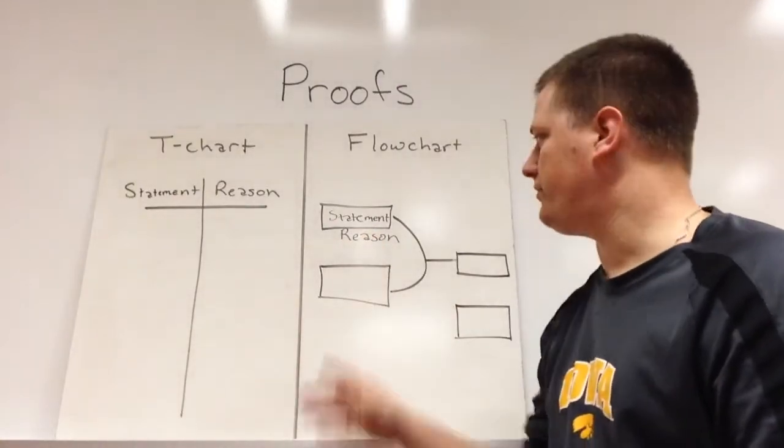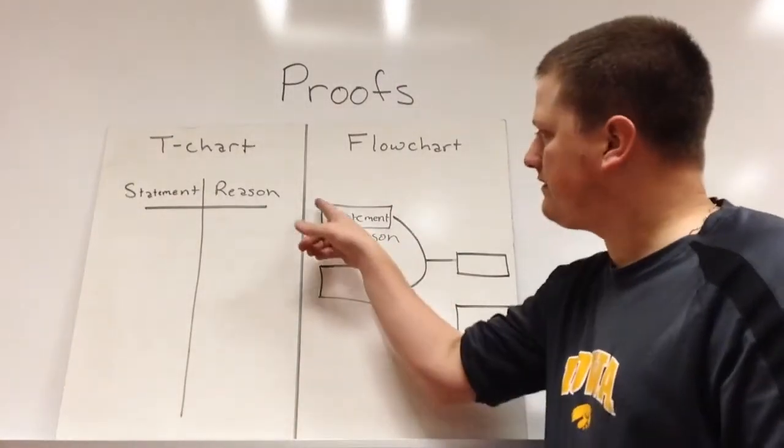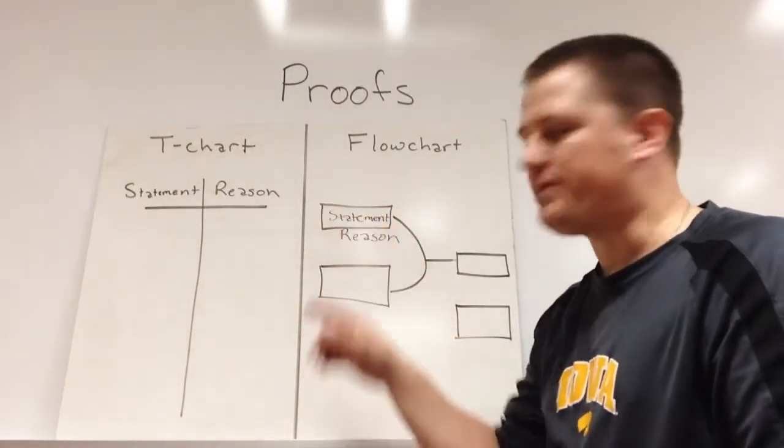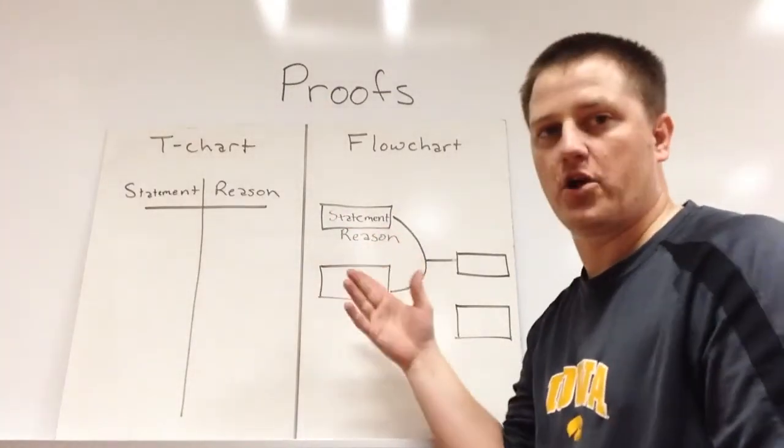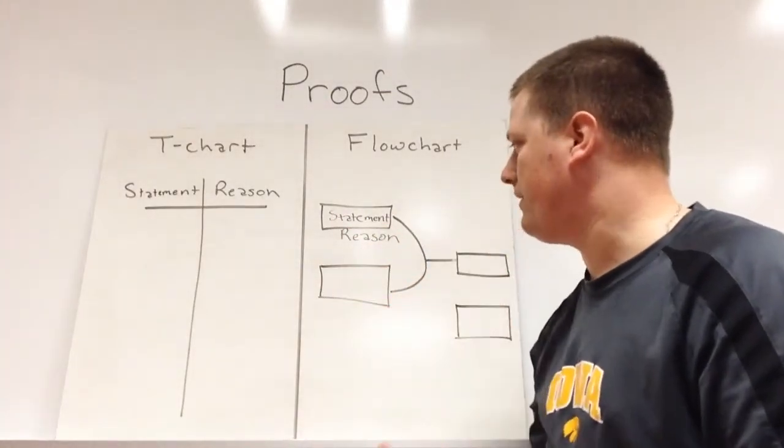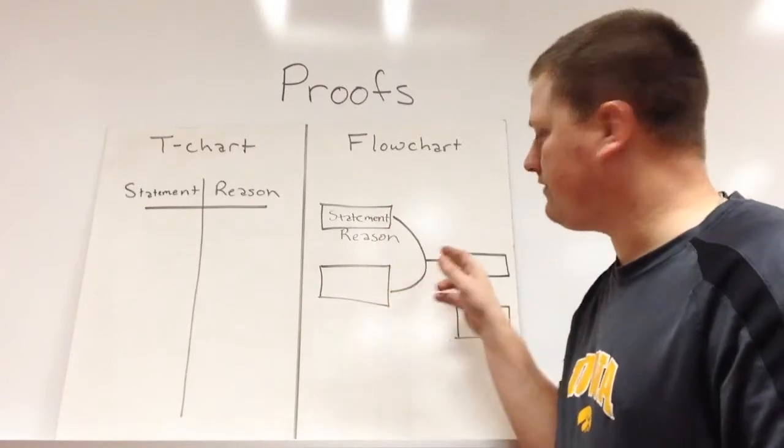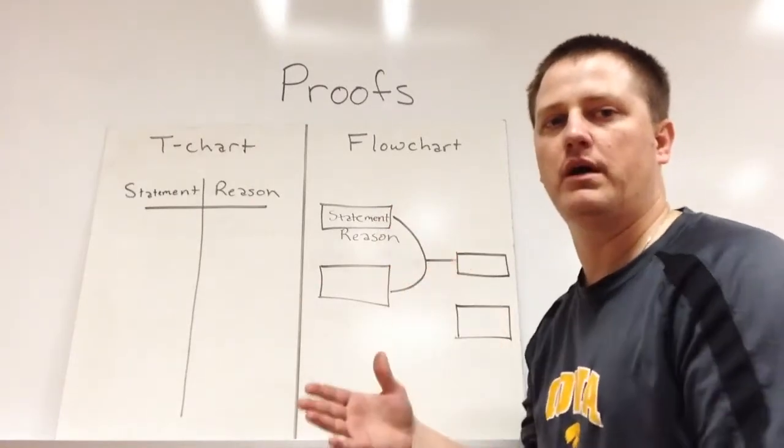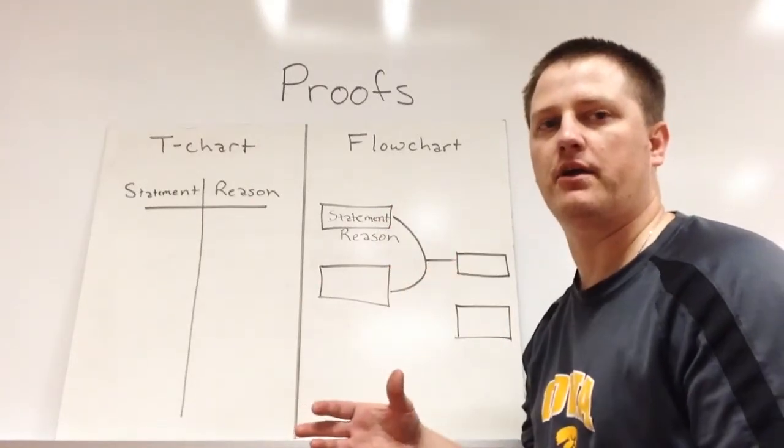In the flowchart, what we'll do is a similar thing, except each box will have a statement. Underneath it we will write, again, a reason for that statement being true. And then we will use lines to guide us to new ideas that we can create.